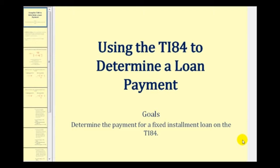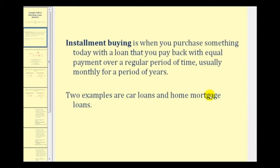Welcome to a lesson on using the TI-84 graphing calculator to determine a loan payment. The goal of the video is to determine the loan payment for a fixed installment loan on the TI-84. Installment buying is when you purchase something today with a loan that you pay back with equal payments over a regular period of time, usually monthly, over a period of years. The two most common examples would be a car loan and a home mortgage loan.